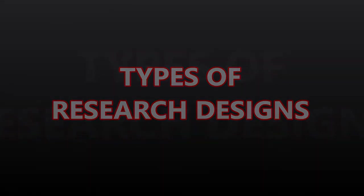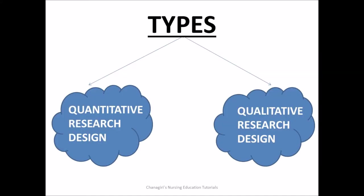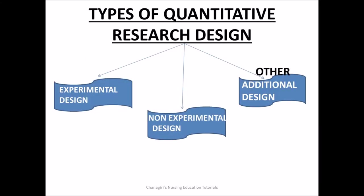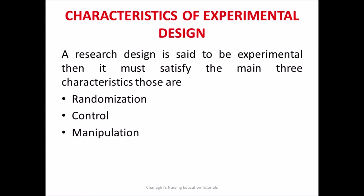This is about the factors that affect in selecting research designs. Next we will move to types of research designs. Research designs are broadly classified into two types: number one, Quantitative Research Designs, and number two, Qualitative Research Designs. Quantitative designs are further classified into experimental research design, non-experimental research designs, and other additional designs. A research design is said to be experimental when it must satisfy three main characteristics: those are randomization, control, and manipulation.